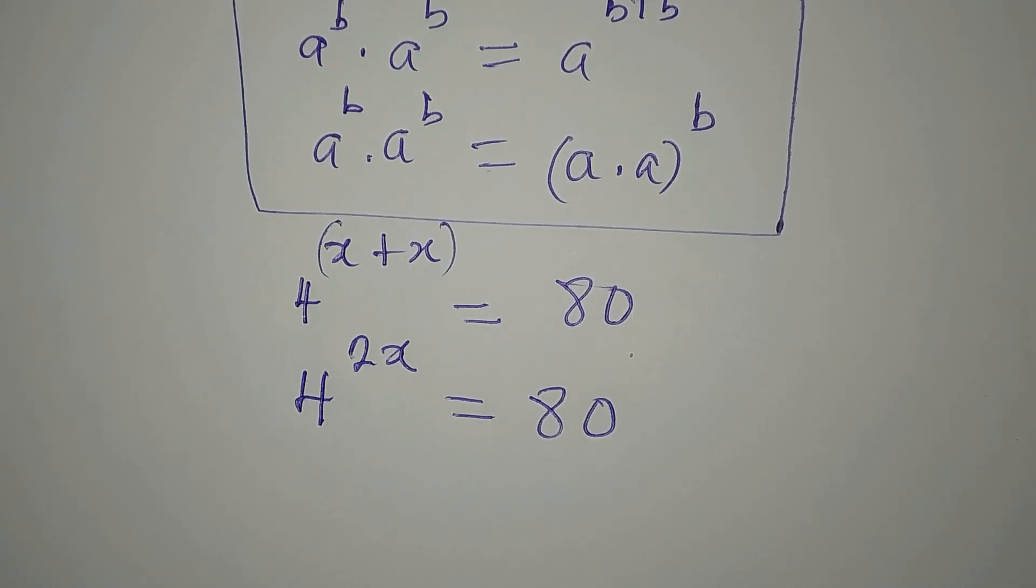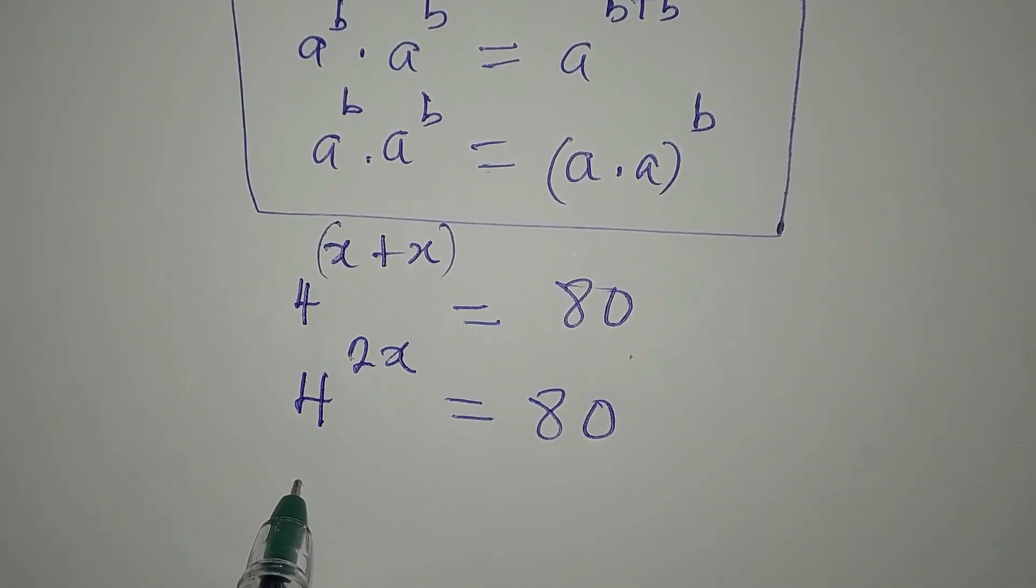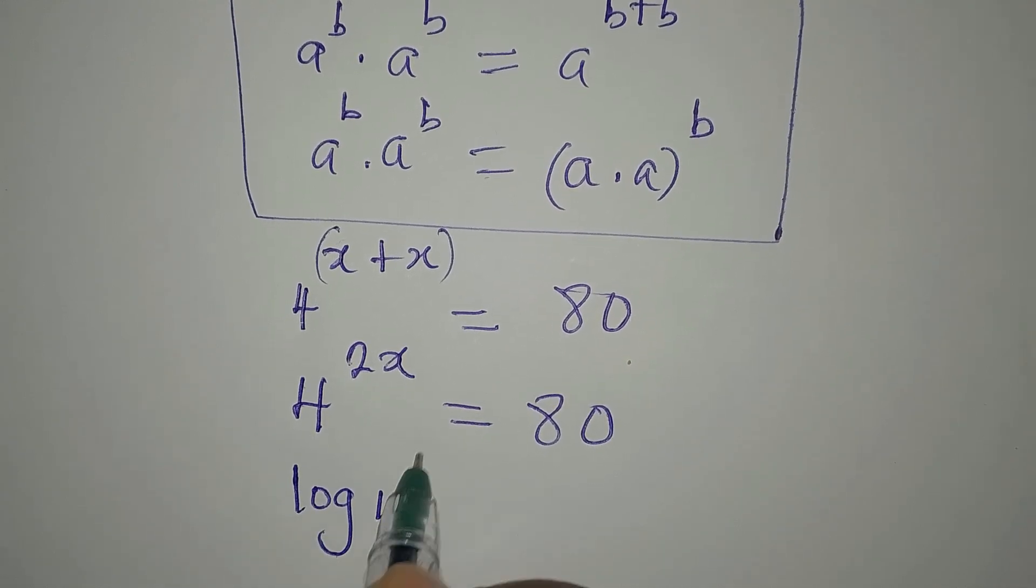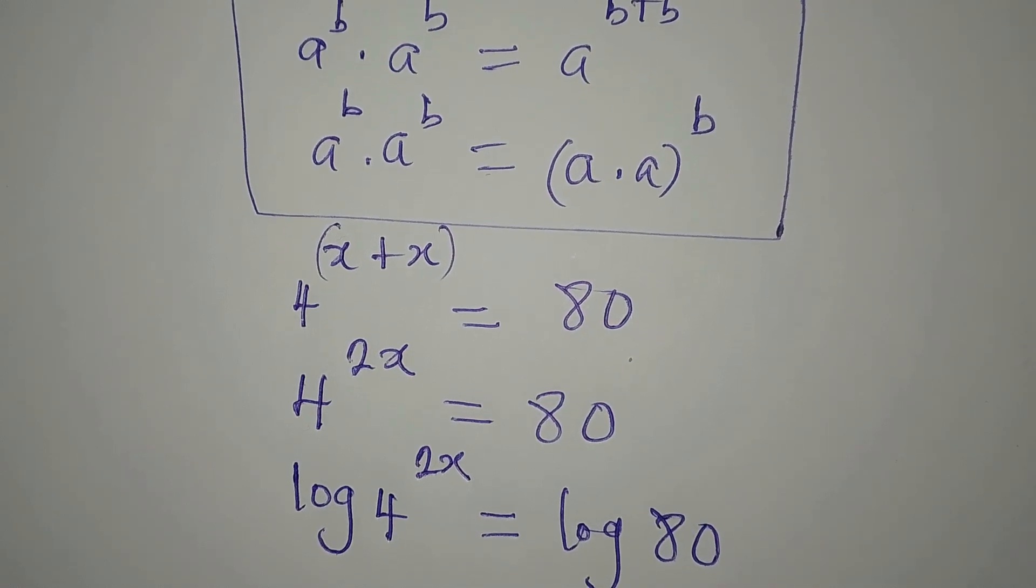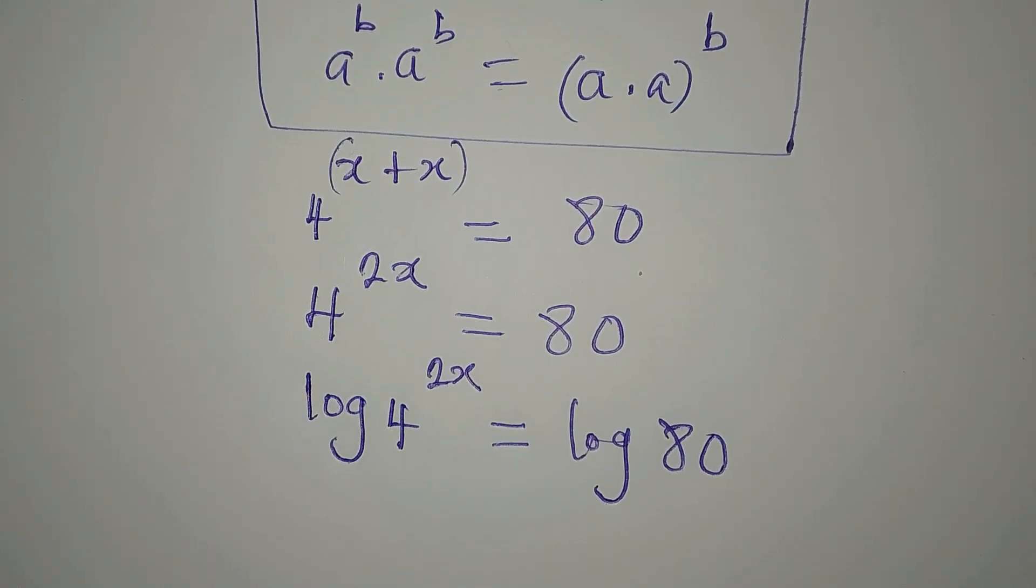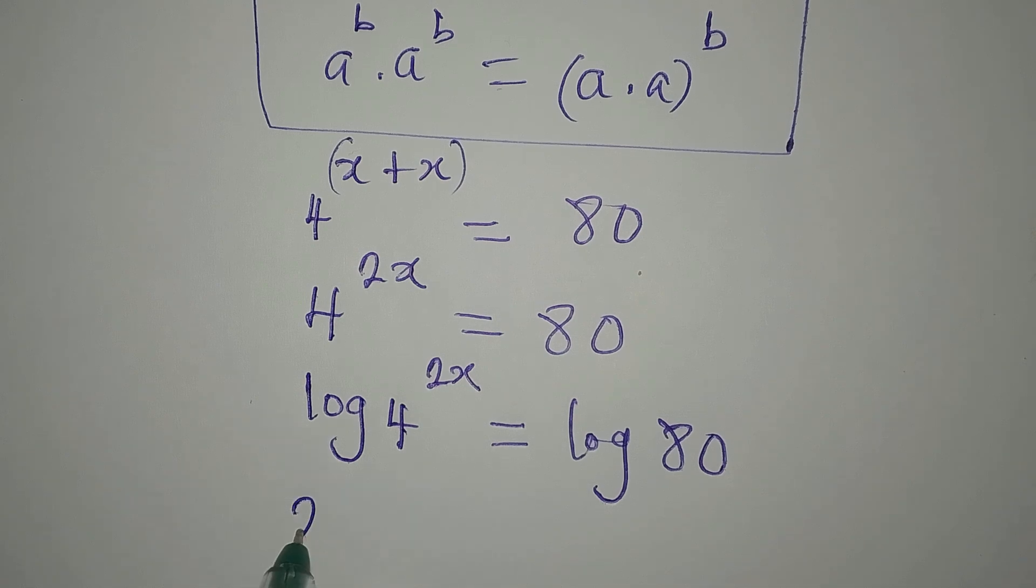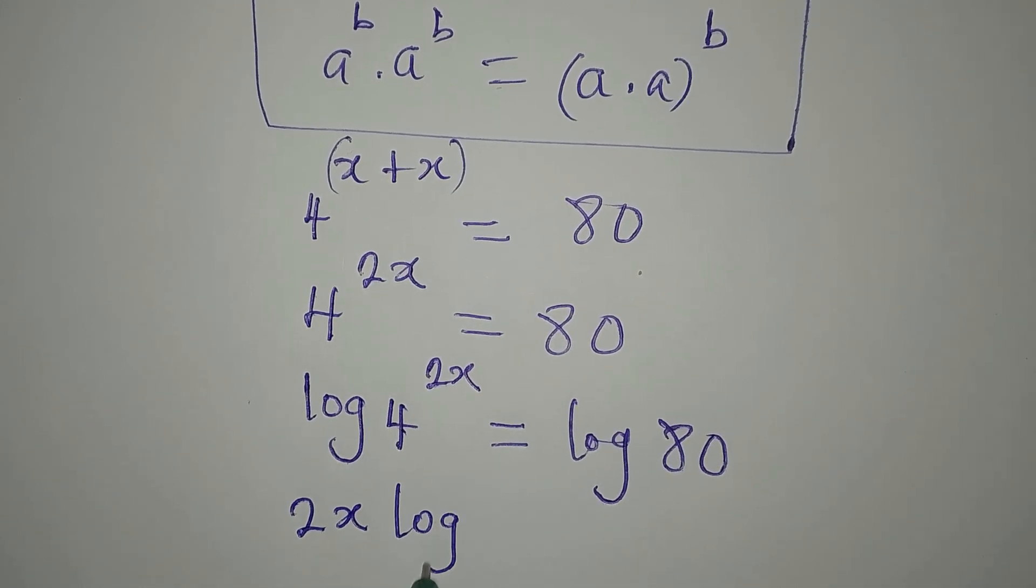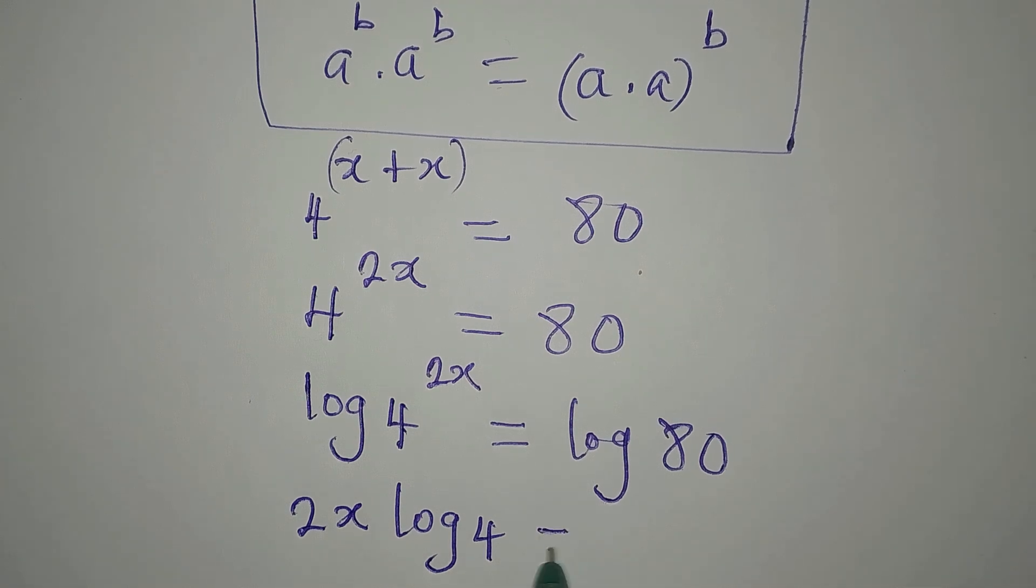Then from here, we can now take the log of both sides since we cannot express 80 in this form. So we will now write log 4 to the power of 2x equals log of 80. Now, the power law of logarithm says the power here should come behind and multiply the log. So we're going to have 2x multiplying log 4, and this will be equal to log 80.